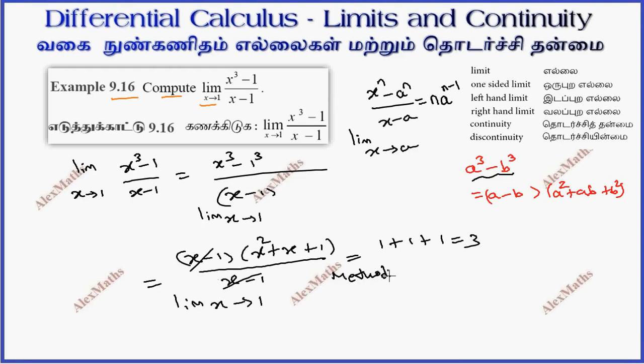In Method 2, we use the formula: x³ minus 1³ divided by x-1, limit extending to 1, using this expression.